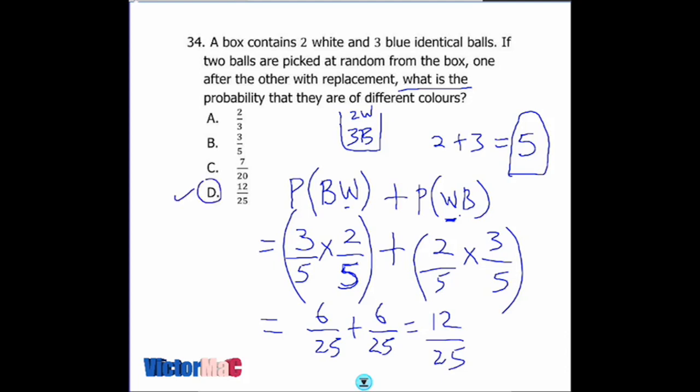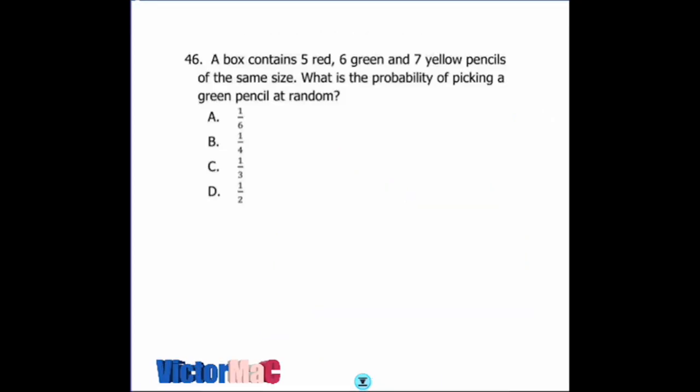Question 46 is on probability. A box contains 5 red, 6 green, and 7 yellow pencils of the same size. These pencils are all identical. What is the probability of picking a green pencil at random? First, we find the total number of pencils: 5 plus 6 plus 7 equals 18 pencils altogether.